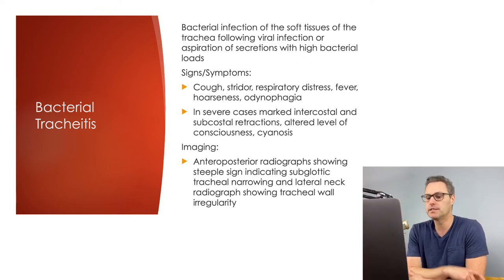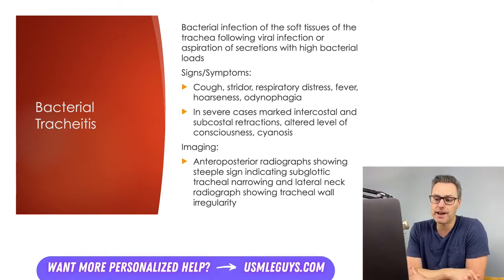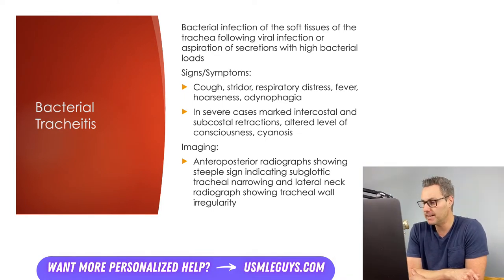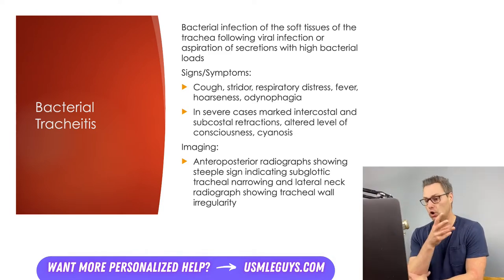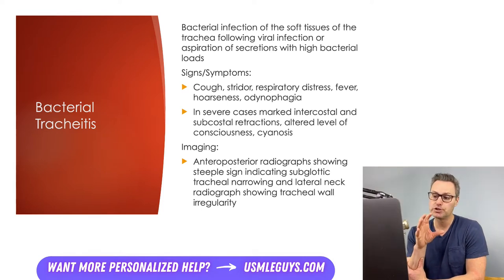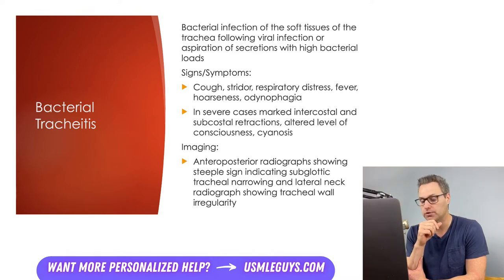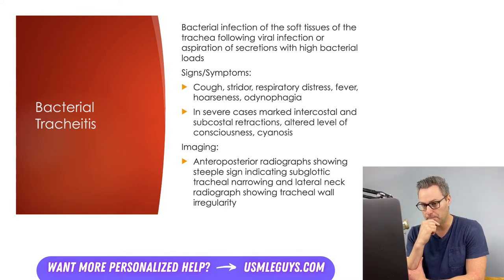Signs and symptoms of bacterial tracheitis include cough, stridor, respiratory distress, fever, altered levels of consciousness, cyanosis, and in severe cases, marked intercostal and subcostal retractions. You may also see hoarseness in the case of a viral infection. Imaging should only be performed in stable patients and will usually show nonspecific findings. Just as in viral croup, bacterial tracheitis may show a steeple sign on AP radiograph, while lateral neck radiography can show tracheal wall irregularity with unclear margins of the mucosa — a sign of bacterial tracheitis.